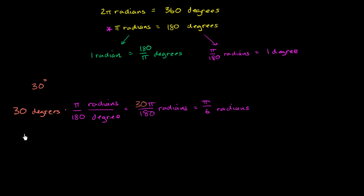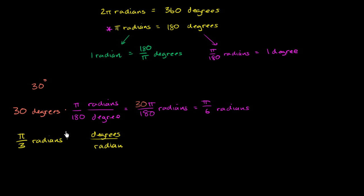Let's think about if we have π over 3 radians and I want to convert that to degrees. We're going to want to figure out how many degrees are there per radian. Think about the π and the 180: for every 180 degrees, you have π radians. 180 degrees over π radians — these are essentially the equivalent thing. You're just multiplying this quantity by 1 but changing the units. The radians cancel out, and then the π's cancel out, and you're left with 180 over 3 degrees. 180 over 3 is 60 degrees.